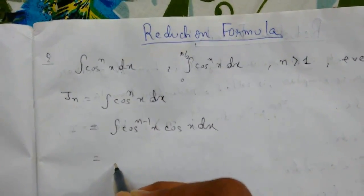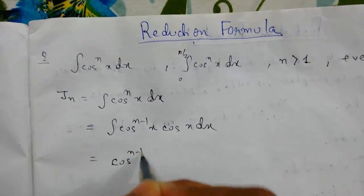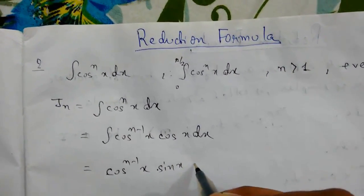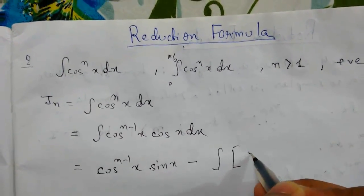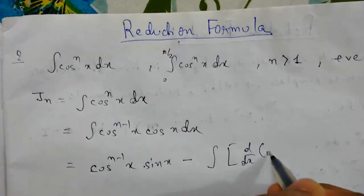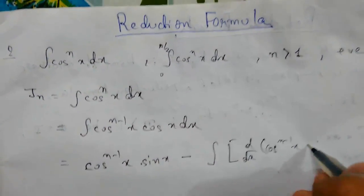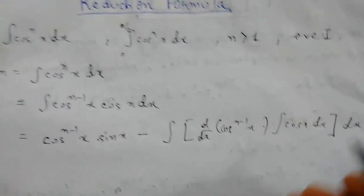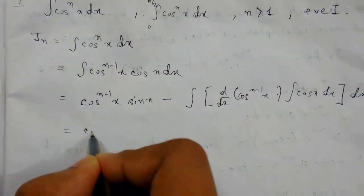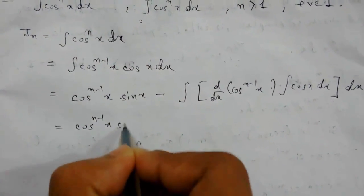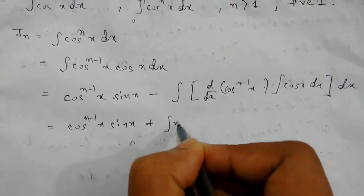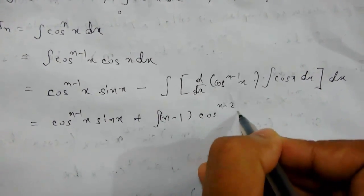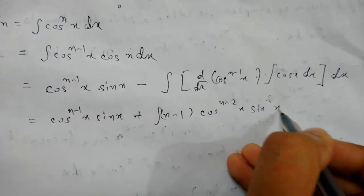Now doing integration by parts, taking cos^(n-1)(x) as the first function. The integration of cos(x) is sin(x), and this will be minus the integration of d/dx of cos^(n-1)(x) times the integration of cos(x) dx, all dx. This gives cos^(n-1)(x)·sin(x) plus (n-1) times the integral of cos^(n-2)(x)·sin²(x) dx.